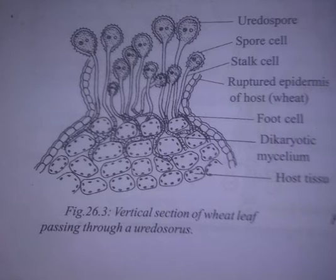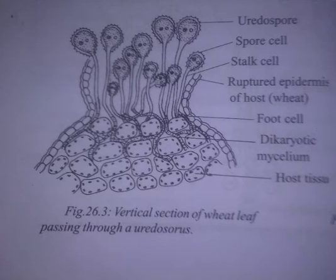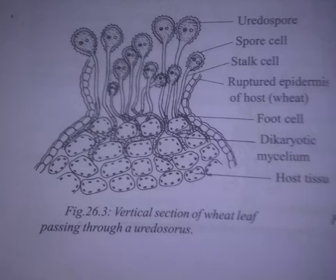Paxinia spores are stalked, unicellular, rounded, bi-nucleate spores produced on the wheat plant by Paxinia, at the end of the year and the early summer stage.